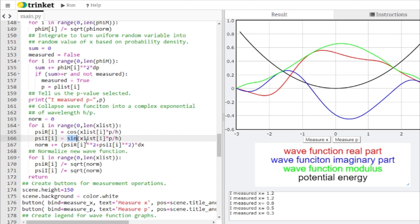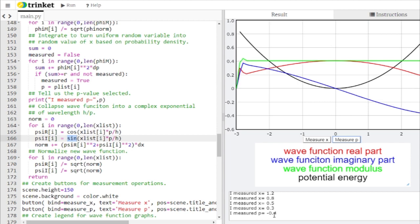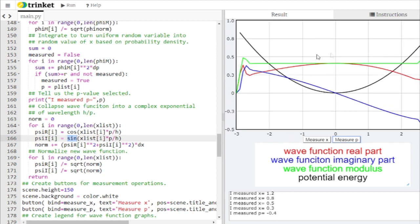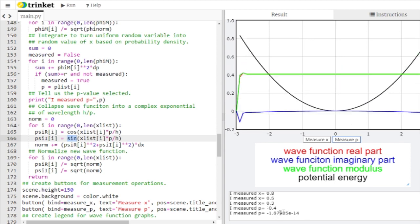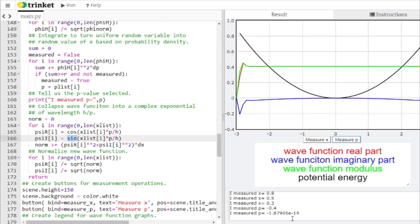And so whenever I click on measure p, measure the momentum, here it tells me I measured a momentum of negative 0.4. And here you've got your real part, here you've got your imaginary part, a cosine and a sine. And again, the wave function cannot stand still. It has to time evolve. So even though I've measured p, now I've got to have the thing start to get wiggly again. I can measure p again. I get a different value of momentum. I got nearly zero for that momentum. That's pretty impressive.